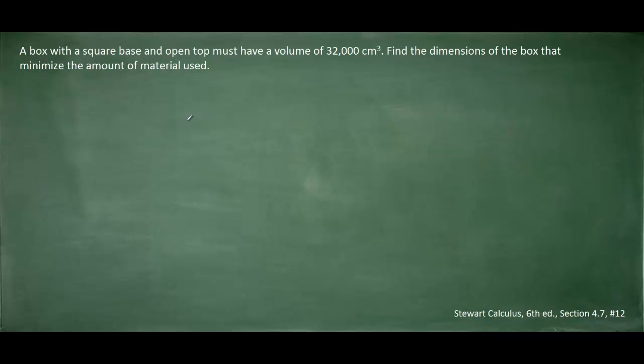To solve any optimization problem, you want to read the question and then draw a picture based on the given information. Now this question describes a box that has a square base, an open top, and a specific volume of 32,000 cubic centimeters. So let's go ahead and try to draw a box based on those characteristics.